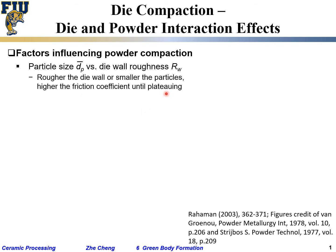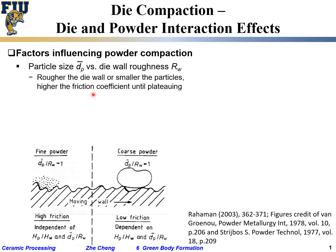Higher friction leads to non-uniform stress distribution. On the other hand, the smaller the particles, the higher the friction — relatively speaking. For the same roughness, the smaller the particle, the more it can 'see' the roughness, so the higher the friction.